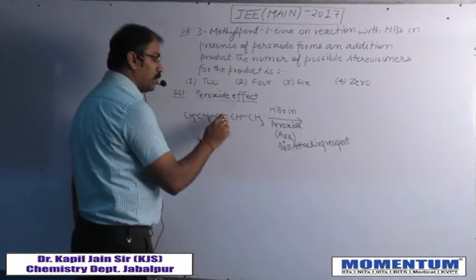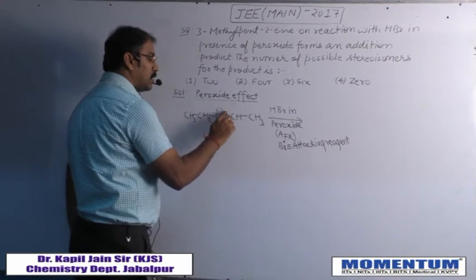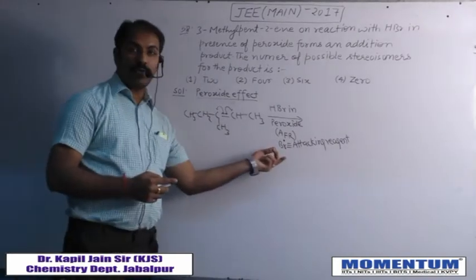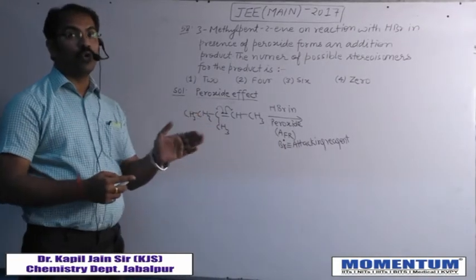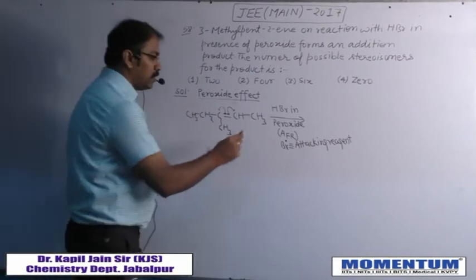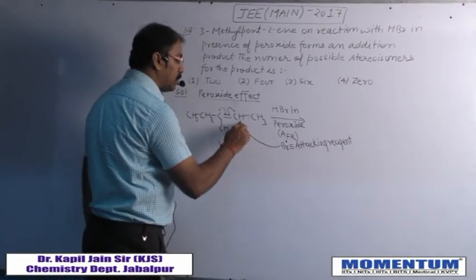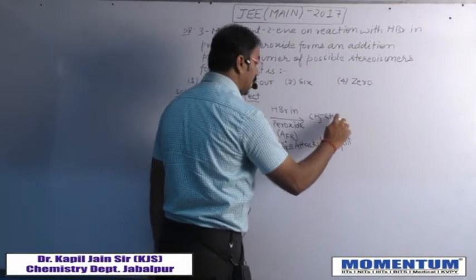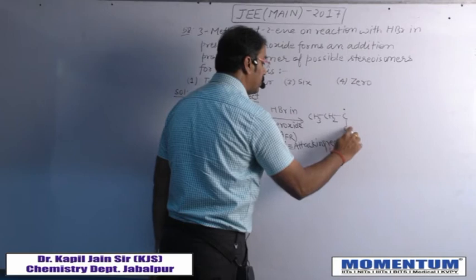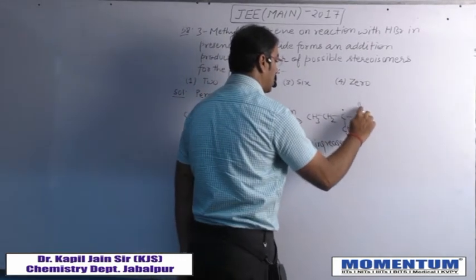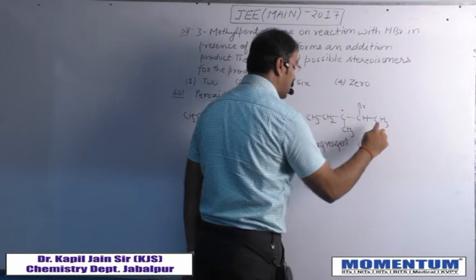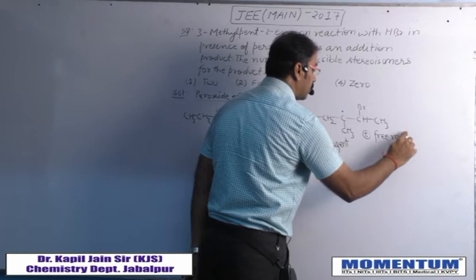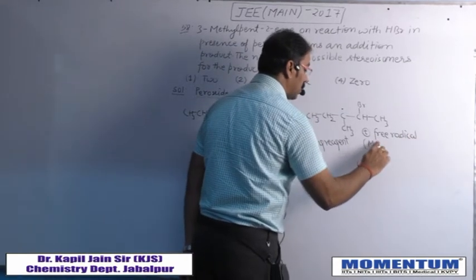Because the bromine free radical attacks the alkene, homolytic bond cleavage takes place. The bromine free radical attacks on that carbon which produces the more stable free radical. So bromine attacks on that carbon, and we get a tertiary free radical, which is highly stable.